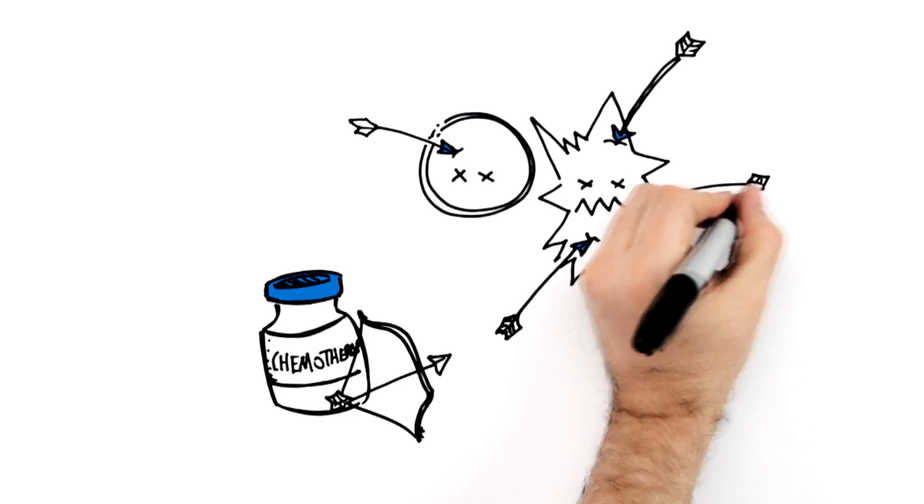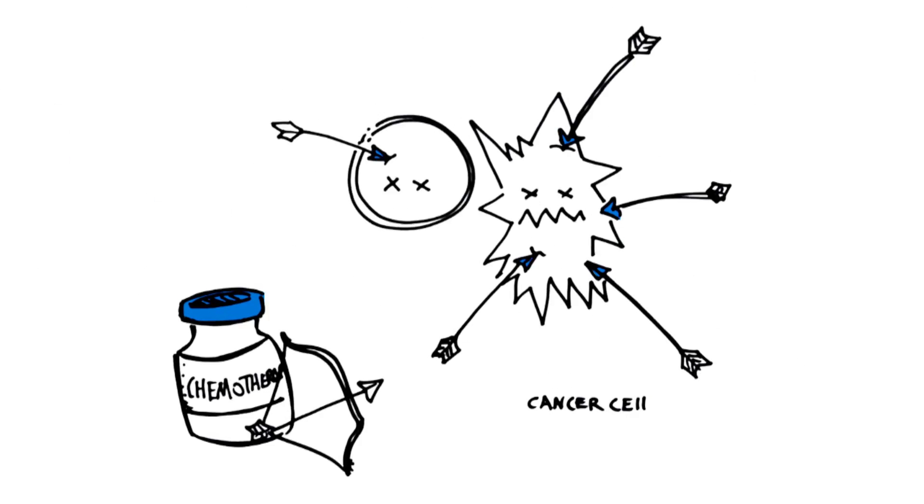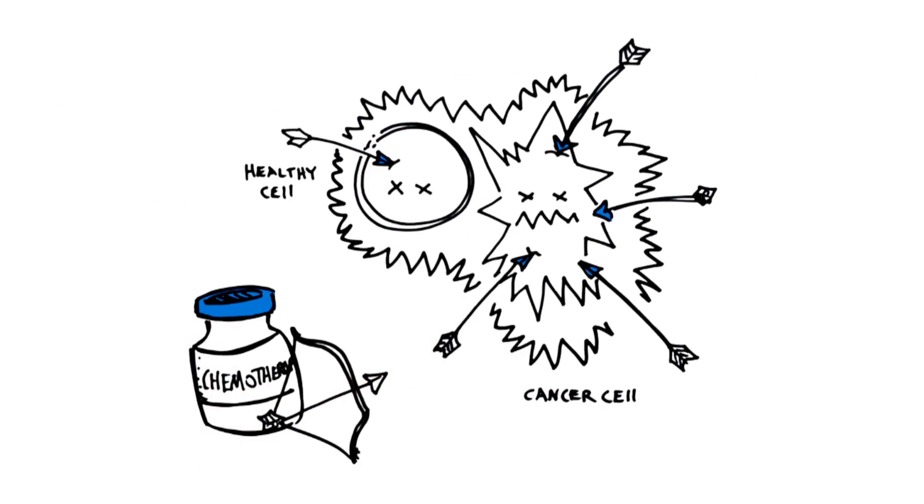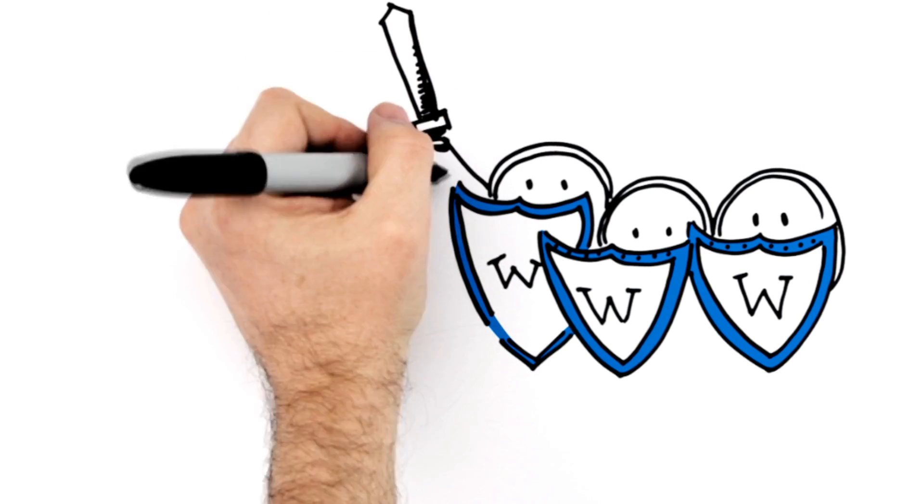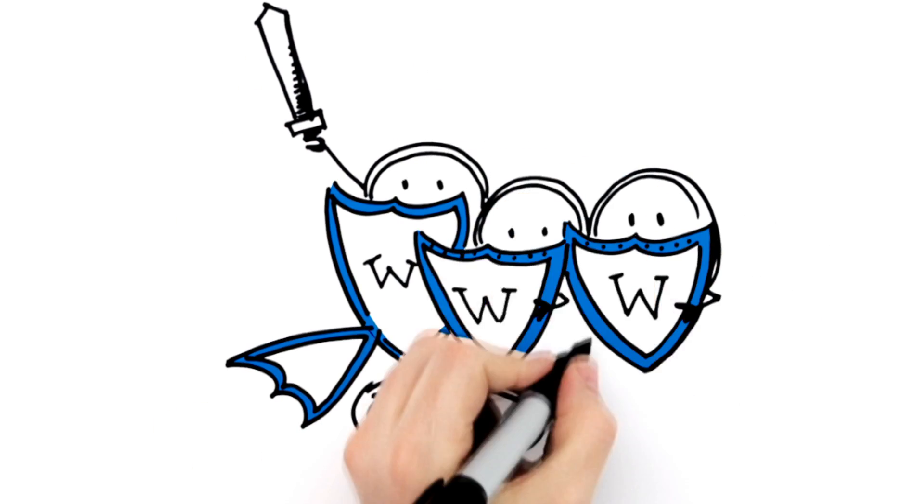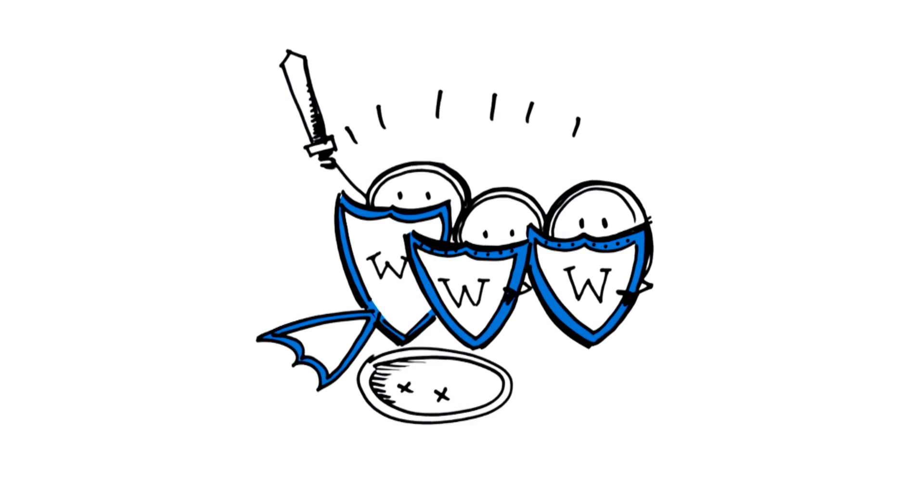Although chemotherapy targets cancer cells, it can also destroy healthy cells, including white blood cells known as neutrophils. Neutrophils are the first line of defense against bacteria and they're vital for a healthy immune system.